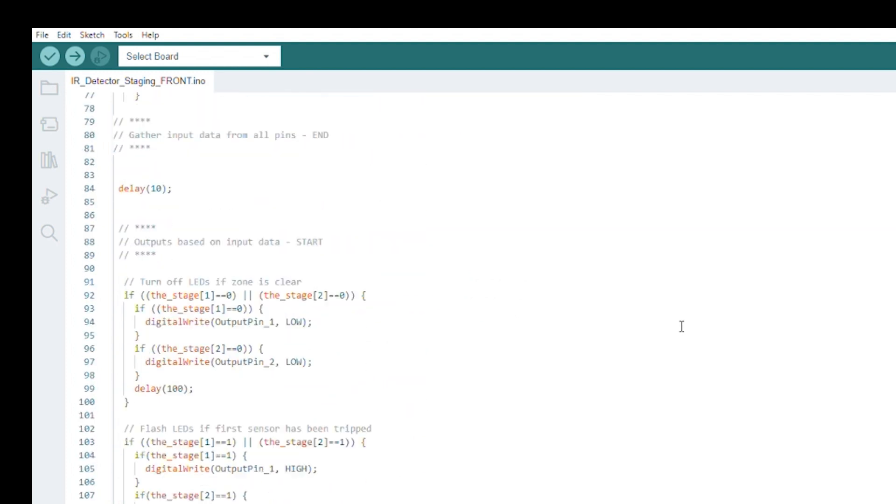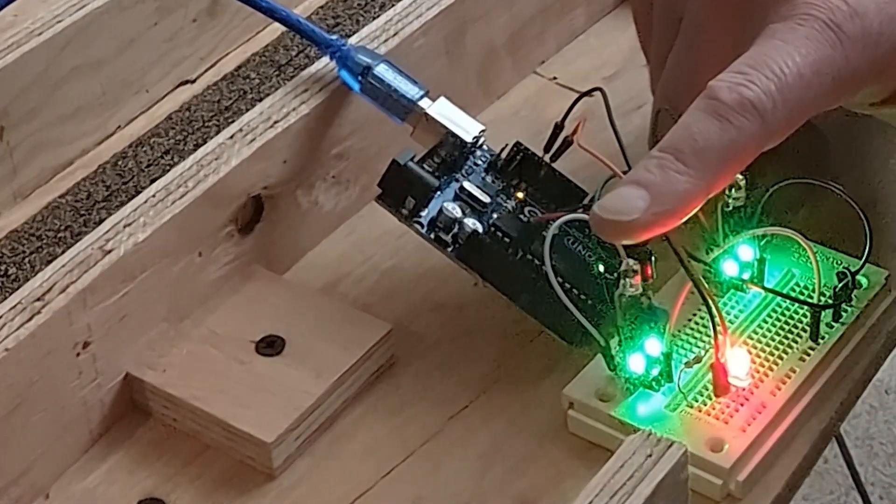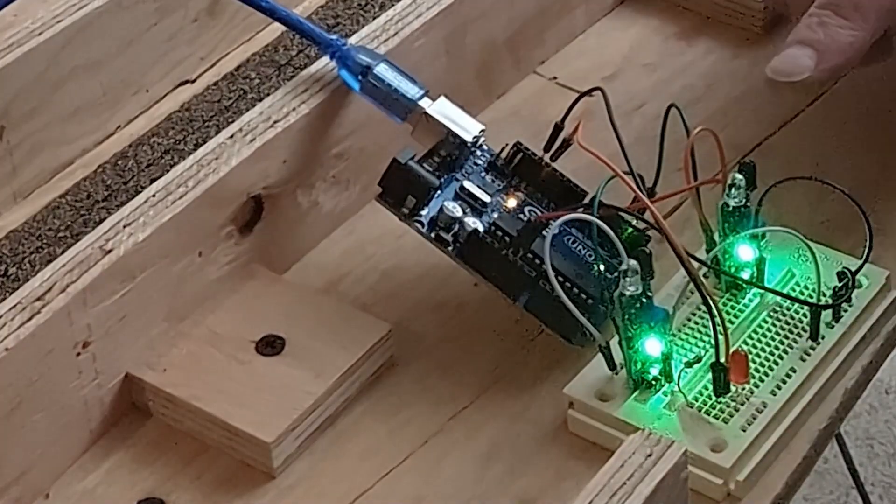The second block of code takes that information and activates the indicators. LEDs illuminate based on the state of the detector and the progression through the indication sequence.